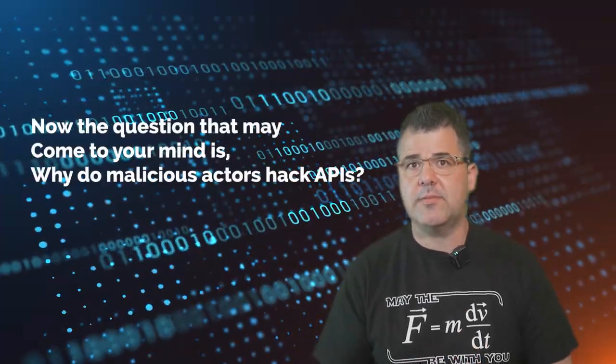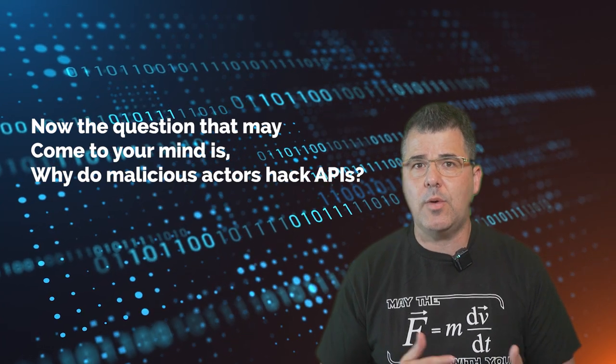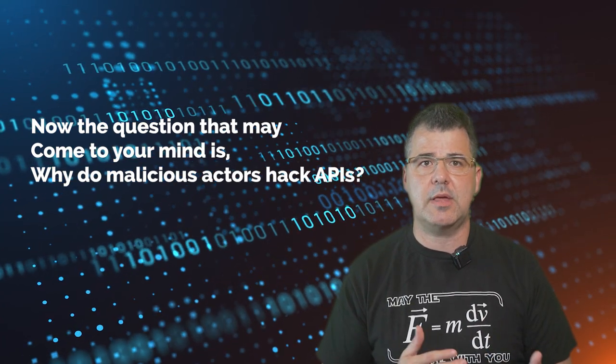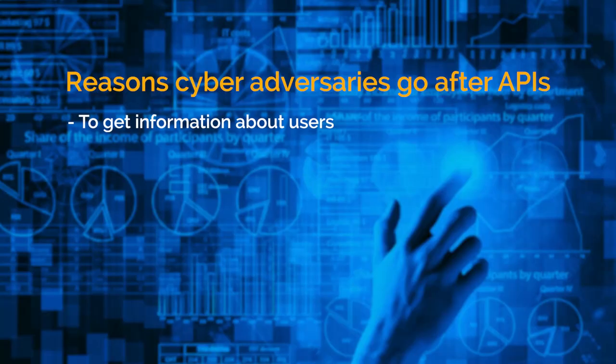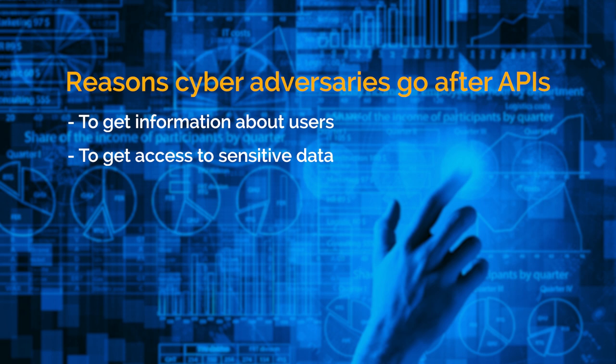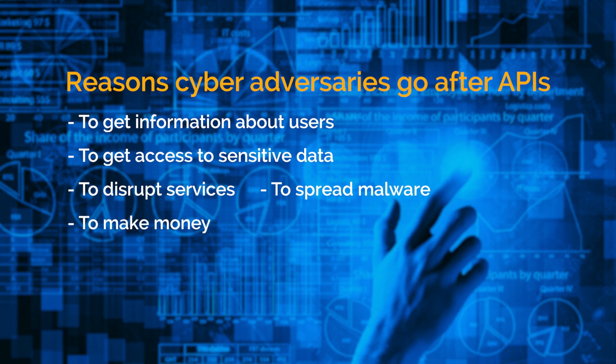Now the question that may come to your mind is why do malicious actors attack APIs? There are multiple reasons cyber adversaries go after APIs, such as to get information about users, to get access to sensitive data, to disrupt services, to spread malware, to make money, to steal data, to exploit vulnerabilities, or to simply test and boast about their hacking skills.